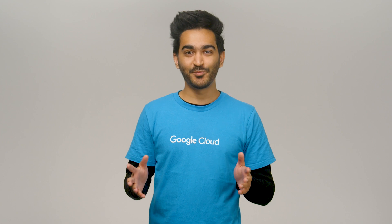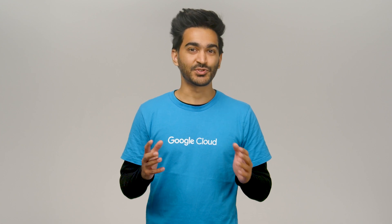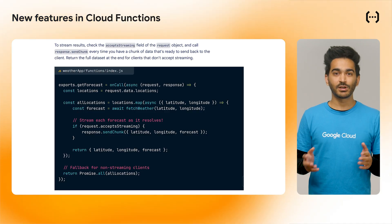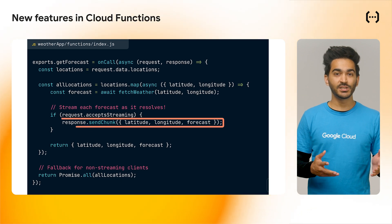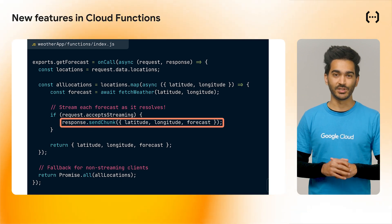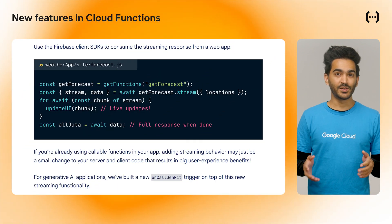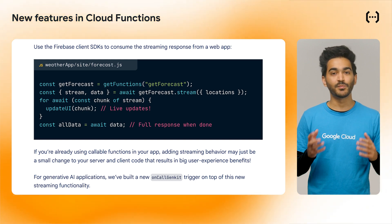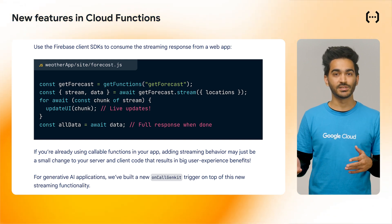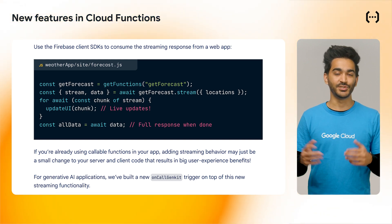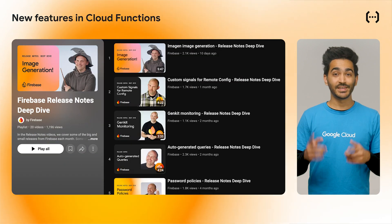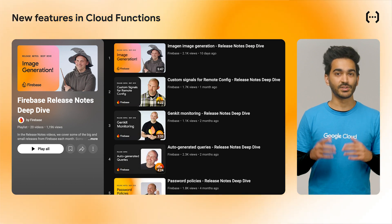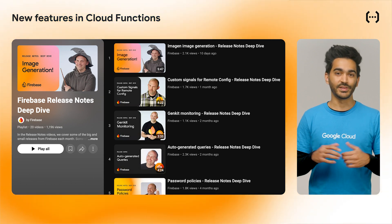Cloud Functions for Firebase now allows you to stream the responses of your callable functions. This means that your Cloud Function can send data to the client in chunks as it becomes available. The client can then process and display this data incrementally, creating a much more responsive and engaging user experience. Stay tuned to the next Firebase Release Notes deep dive, as we'll cover this feature more in depth.